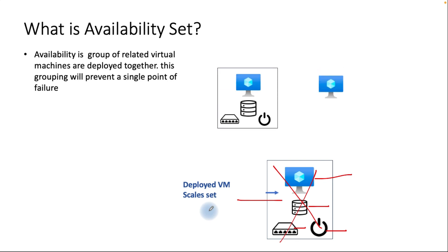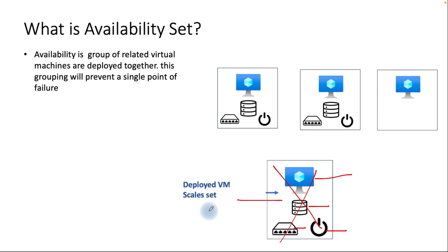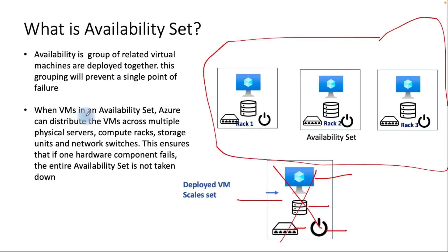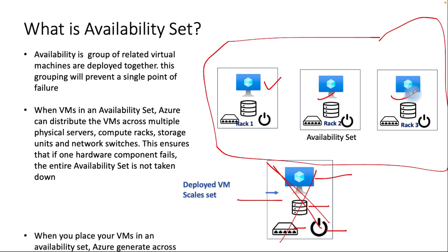The virtual machine will be distributed across servers — you can see rack one, rack two, and rack three — creating the actual availability set. When a VM is in an availability set, Azure distributes the VM across multiple physical servers, computer racks, storage units, and network switches. This ensures that if one hardware component fails, the entire availability set is not taken out.